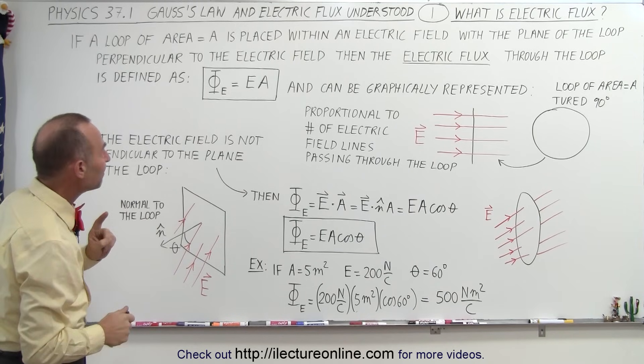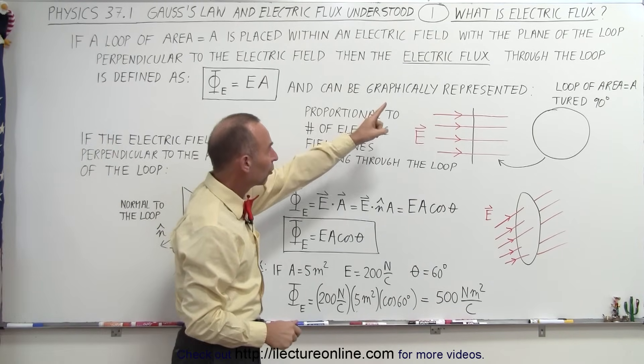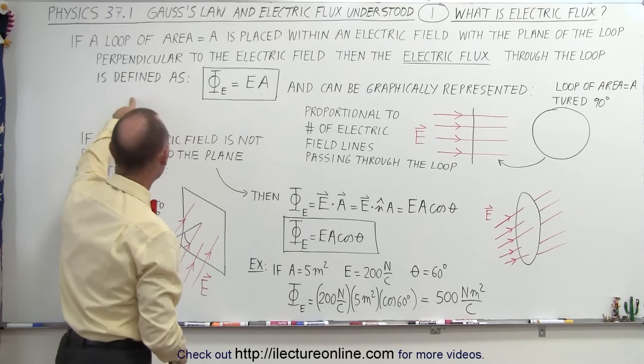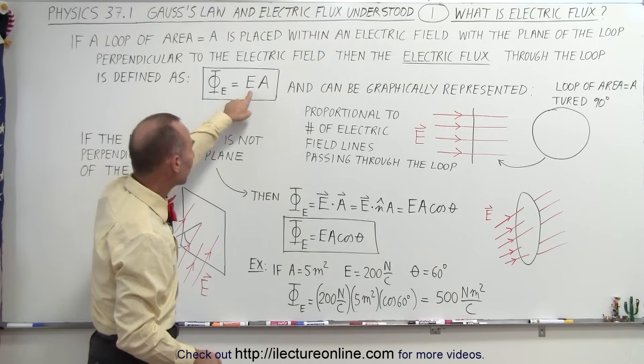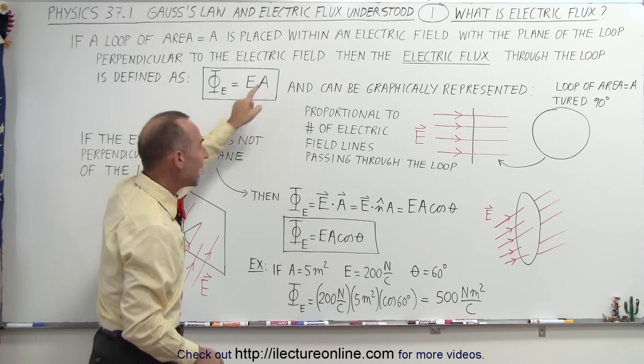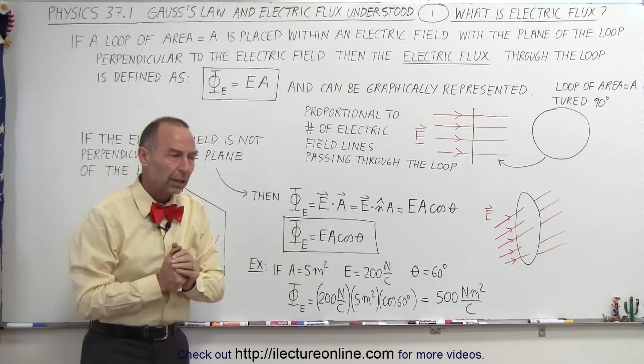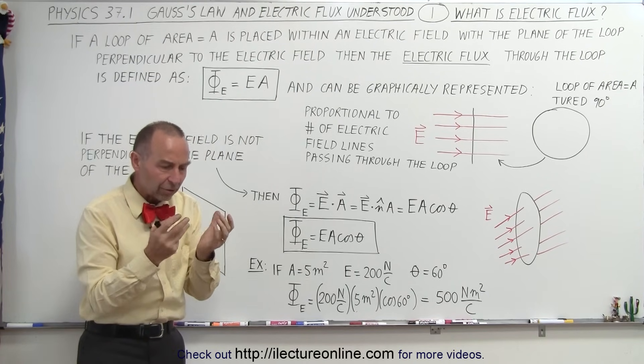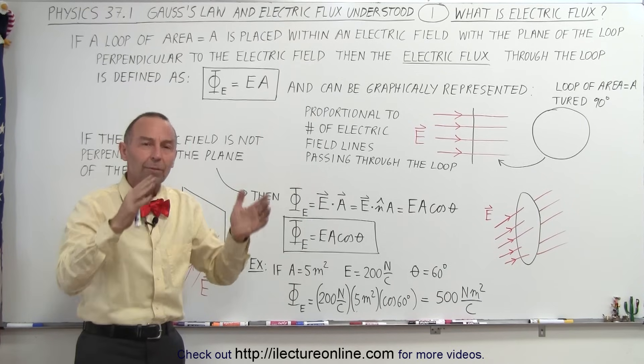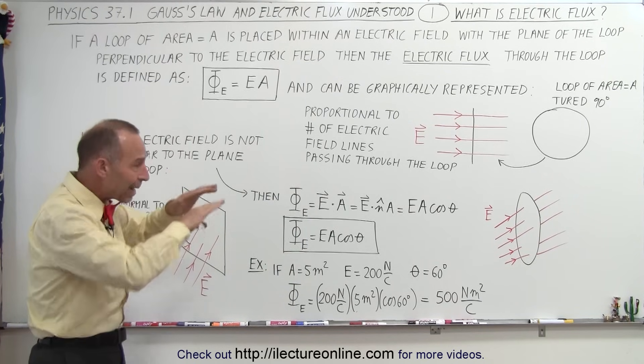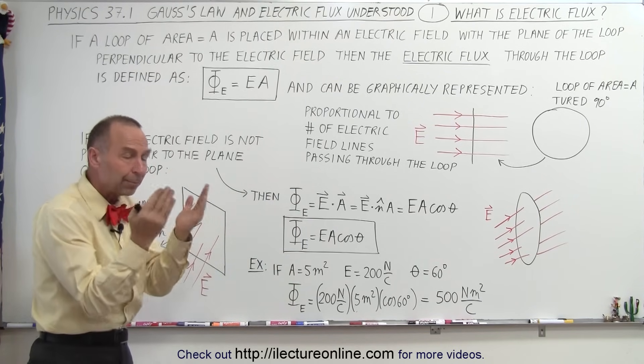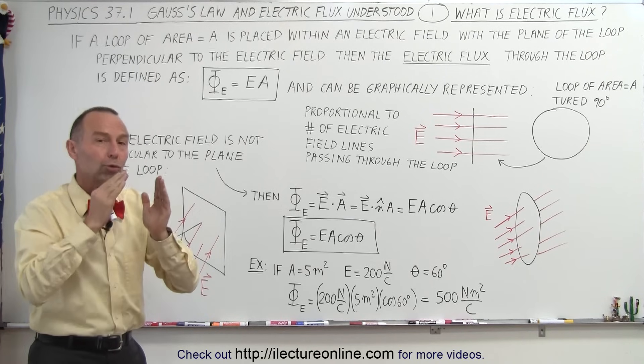Then we can say that the electric flux through the loop is defined as the product of the magnitude of the electric field and the area of the loop. So it's actually the product of two things. You multiply the strength or the magnitude of the electric field times the area of the loop. That product is the flux through the loop.